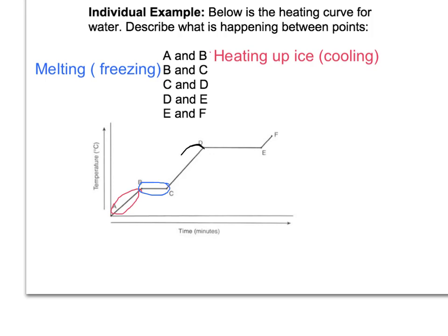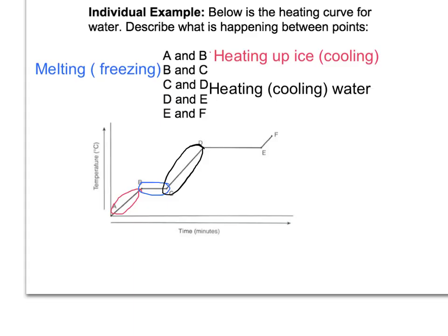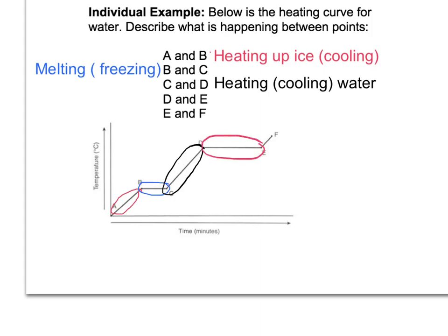The next one, C and D — what's happening there? Since it's going up, I know there's a temperature change, so I must be heating or cooling something. And that's what I'm doing — I'm heating or cooling water. So what's happening at D and E? Again, I have a flat point, meaning no temperature change, but I'm still adding energy, so I have to have a phase change.